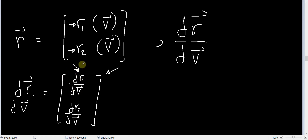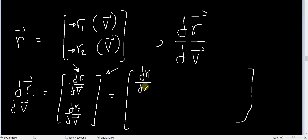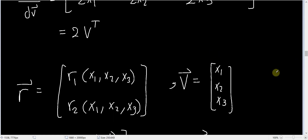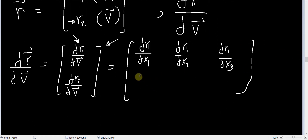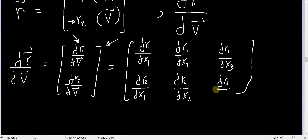Each component like dr1/dv is the derivative of a scalar with respect to a vector, which we know is written as a row vector. So the first component is [dr1/dx1, dr1/dx2, dr1/dx3], and the second component is [dr2/dx1, dr2/dx2, dr2/dx3]. This means the derivative of a vector with respect to a vector turns out to be a matrix.